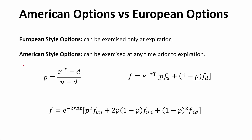Today we look at American options versus European options. European style options can only be exercised at expiration — at the last time period in our binomial tree. American style options, on the other hand, can be exercised at any time prior to expiration, so at any other period in the binomial tree if it's optimal. Here are the three formulas we'll need: the probability formula, the current option price for a one-step binomial tree, and the formula for a two-step binomial tree.